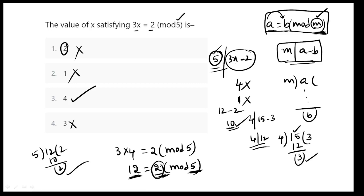5 table to, 12 nu divide chas kundamu, remainder 2. So dhini meaning adhi, a is equal to b modulo m anedhi. M table to, a nu divide chas kundamu, remainder. This is remainder, ikkadu unde, remainder yadhi.